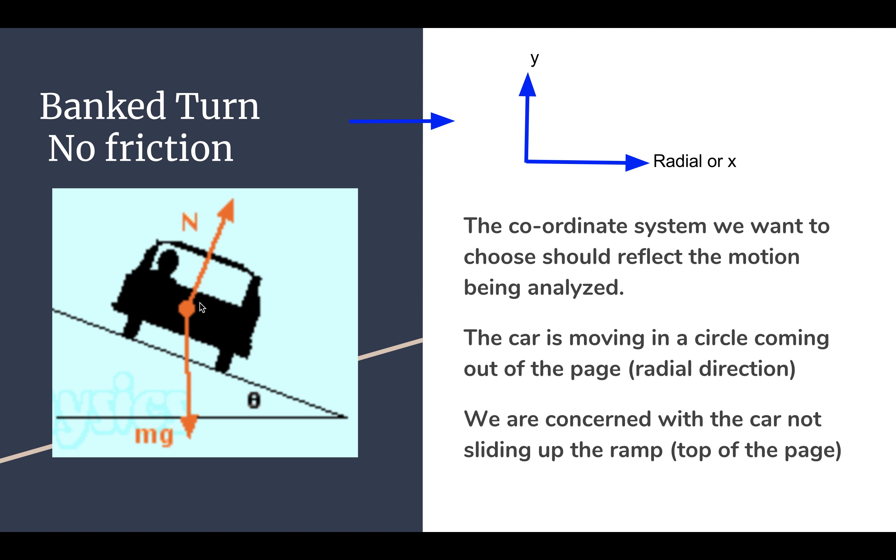So we have the circular motion of the car taking a turn, but the banked turn problems are also concerned with the car not driving too fast that they can't maintain that circular path and start to spin out, and in this case would spin up the curve.